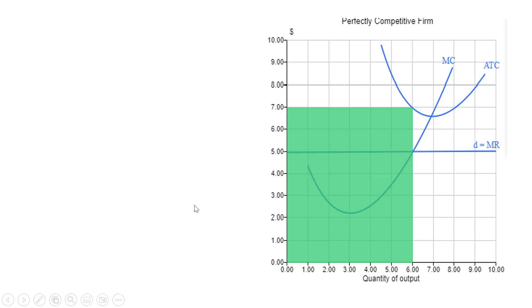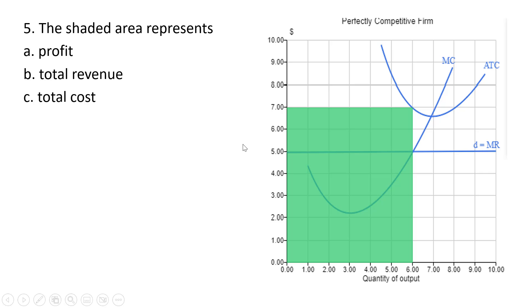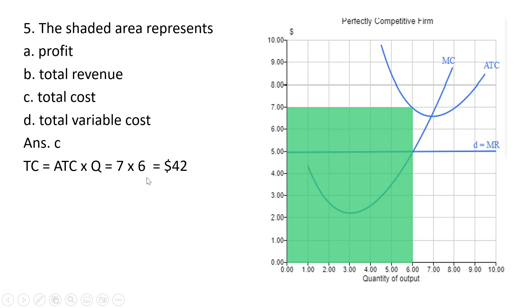Moving on to a slightly different diagram. Question five. The shaded area represents — at six units of output, average total cost is seven. The correct answer is total cost, answer C. Total cost would be average total cost times quantity. The average total cost is seven dollars and the quantity is six, so we get a total cost of forty-two dollars.